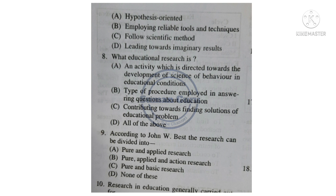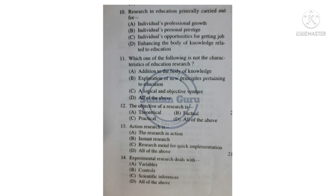Question 10: Research in Education is generally carried out for — Option A: Individual's Professional Growth. Option B: Individual's Personal Prestige. Option C: Individual's Opportunities for Getting Job. Option D: Enhancing the Body of Knowledge Related to Education. Answer is Option D: Enhancing the Body of Knowledge Related to Education.